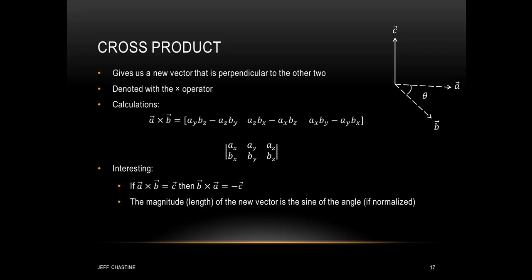Another common operation between two vectors is the cross product. When you compute it, you get back a third vector that's perpendicular to the other two. Mathematicians have a special operator for this — don't confuse it with the multiplication sign. For vectors a and b producing cross product c, the first component is ay×bz - az×by, the z component is ax×by - ay×bx, and the y component is az×bx - ax×bz. This cross pattern in the formula may be why they call it the cross product.